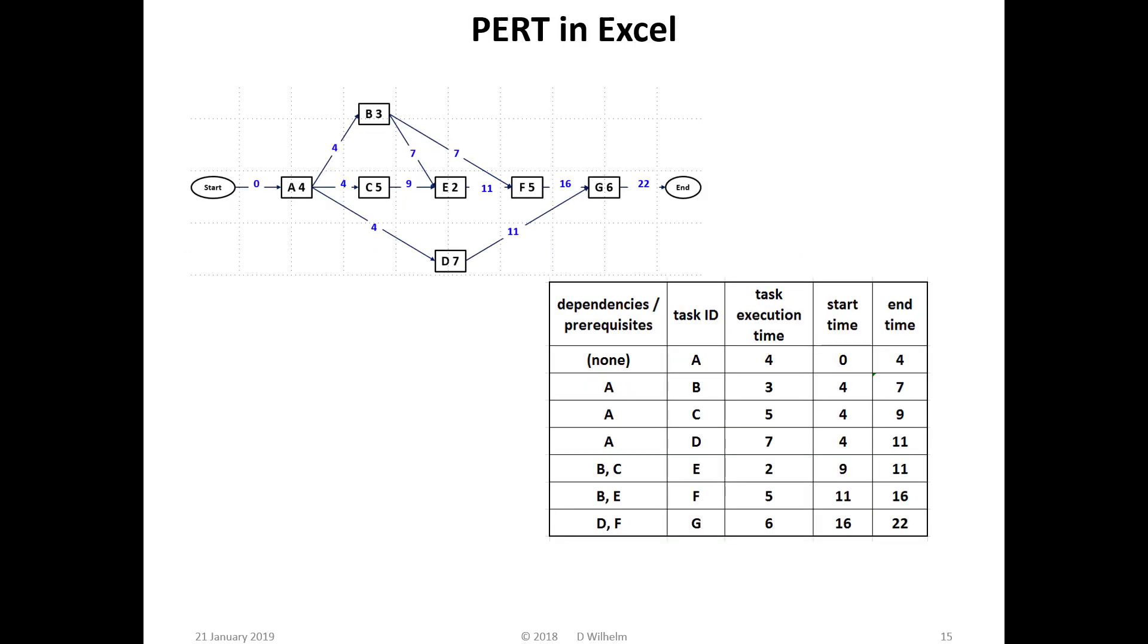A PERT table can be easily converted to an Excel spreadsheet. Just add two additional columns, start time and end time. Start time equals zero for tasks with no prerequisites. For each task, the end time equals the start time plus execution time. The only slightly challenging item is determining the start times.